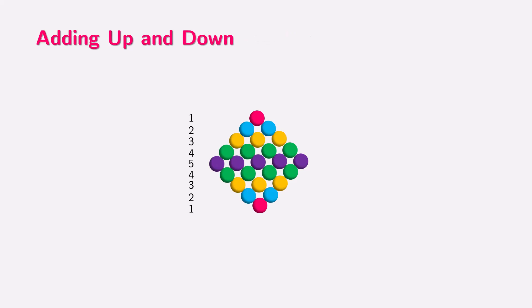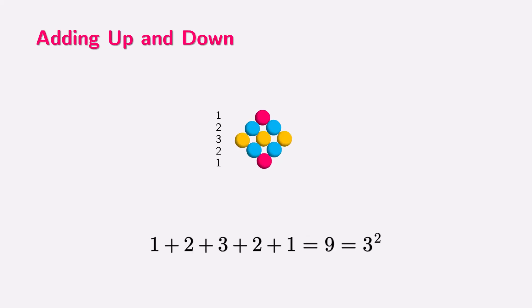Here's another cool pattern. We can also create square numbers by adding numbers up and down, like 1, 2, 3, and then back down to 1. For example, 1 plus 2 plus 1 equals 4, which is 2 square.